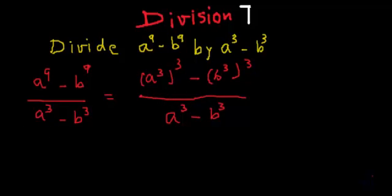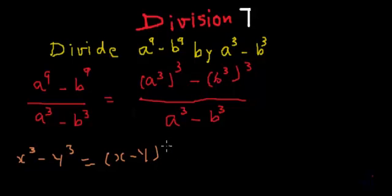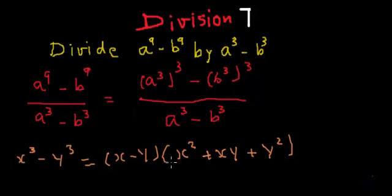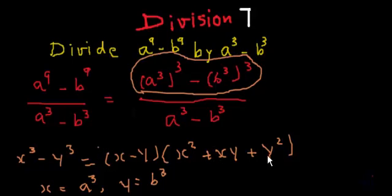Now if we remember properly, we have also learnt one more identity: x cube minus y cube is equal to x minus y multiplied by x square plus xy plus y square. So if we put x equal to a cube and y equal to b cube, we can rearrange the numerator using the right-hand side of this identity.